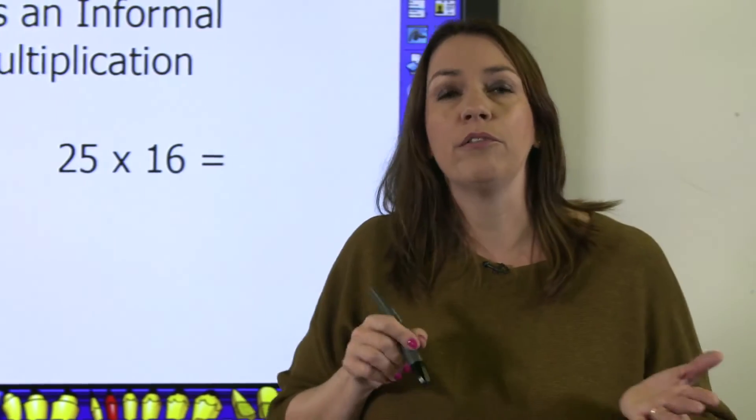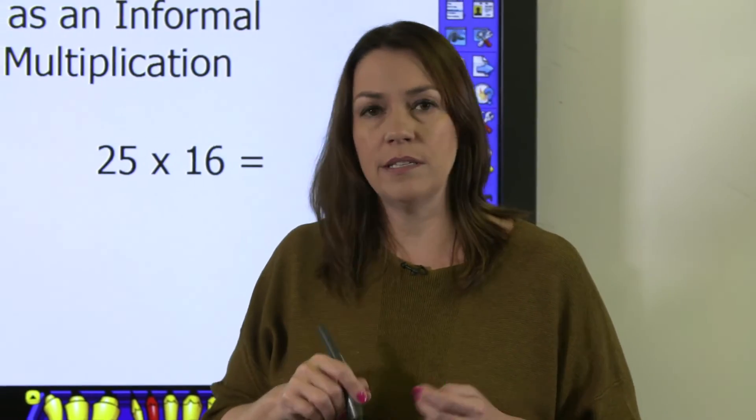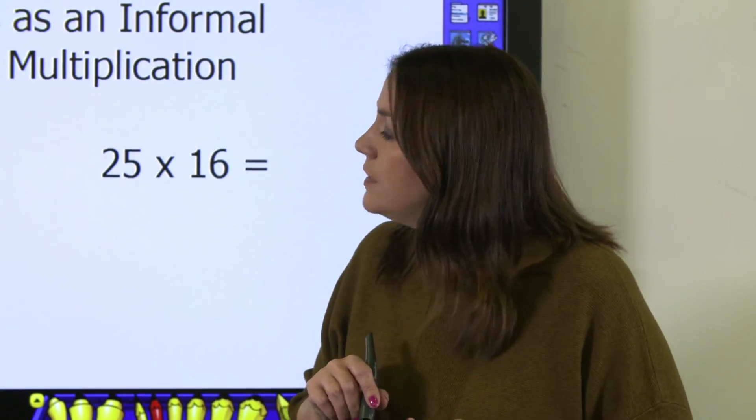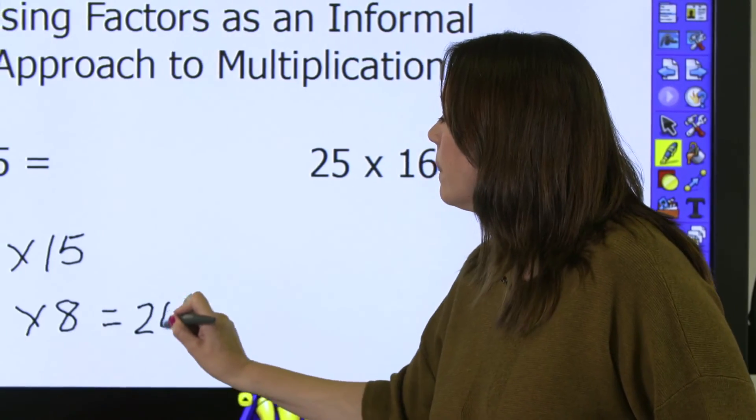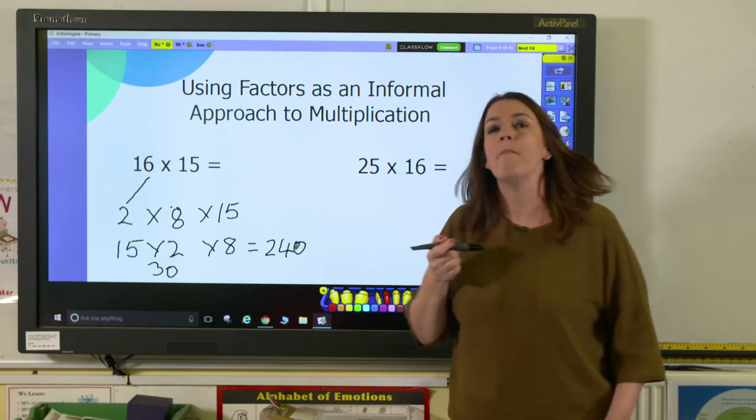And 30 times 8, well we know 3 eights are 24. 30 is 10 times bigger. So 30 times 8 is 240. We've solved that much more easily.